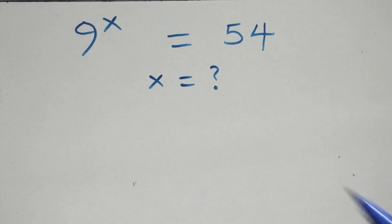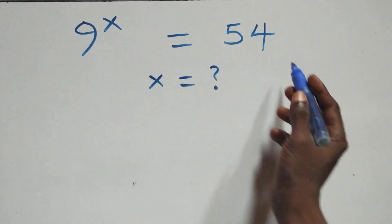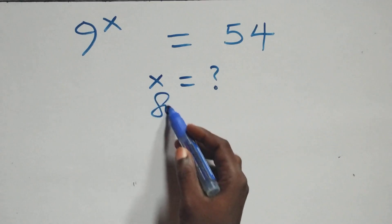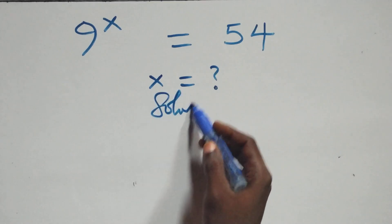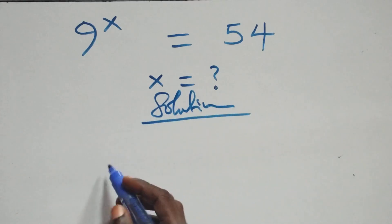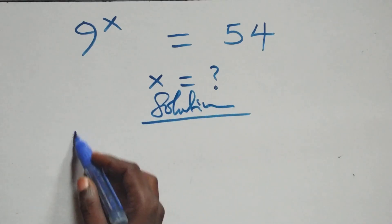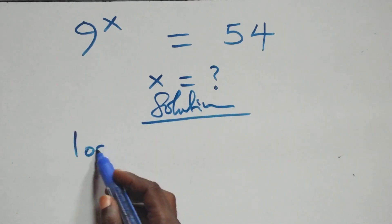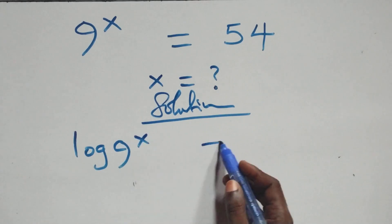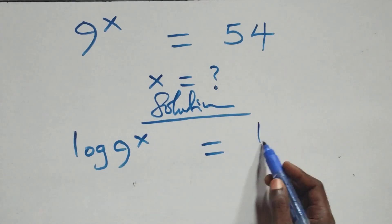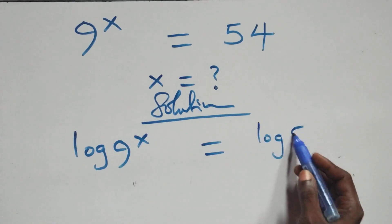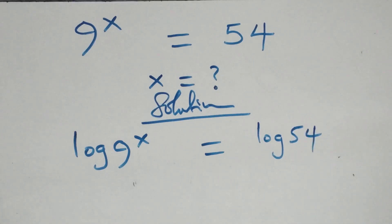Hello, you are welcome. How to solve this nice exponential equation. And what we have here, we take the log on both sides — that is, we have log 9 raised to power x equals to log 54 on this side.